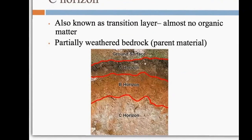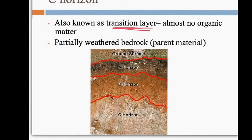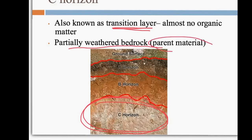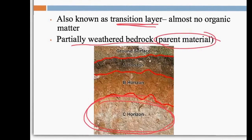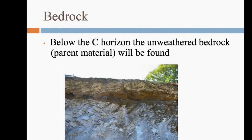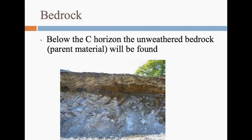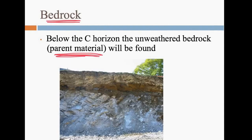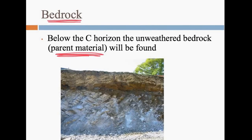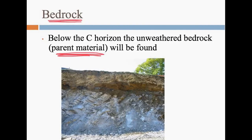The C horizon is also known as the transition layer. There's really no organic material and it just kind of looks like rocks — it's partially weathered bedrock. Bedrock is the parent material, so it's transitioning from straight-up rock to soil. Below the C horizon is the bedrock or parent material, which is the original founding rock in this area.